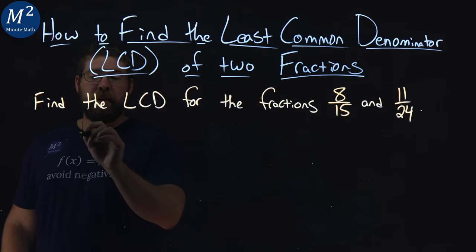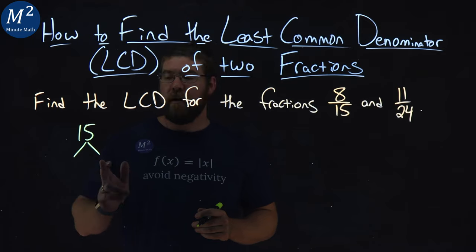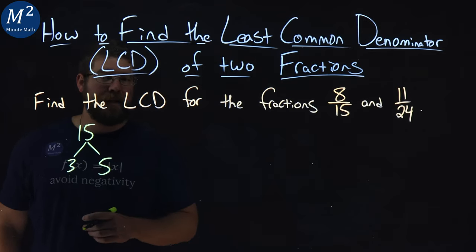Let's break down the two denominators. Fifteen, well fifteen multiplied out in the factor tree is just a three times a five, and we can't break it down anymore.